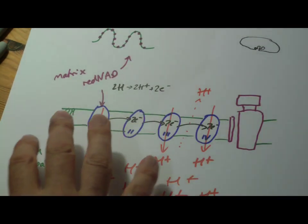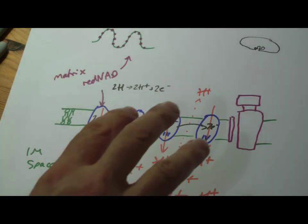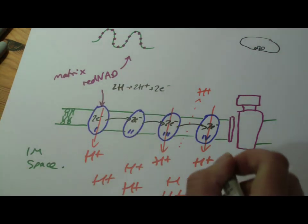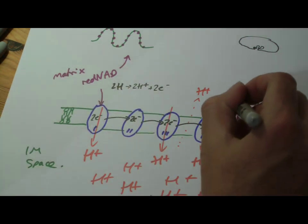And that's one of the reasons why oxidative phosphorylation is not as efficient as you might expect it to be, because of this leakage. But mainly they don't. Mainly they come through this channel here.